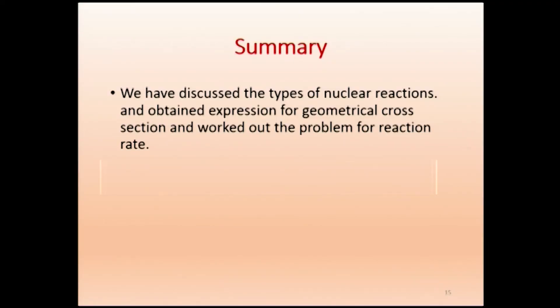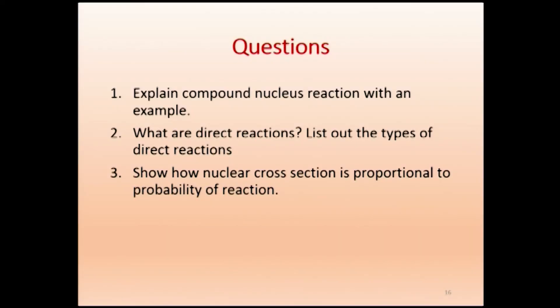To summarize: we discussed the types of nuclear reactions — compound nucleus formation (for low-energy incident particles) and direct reactions (for high-energy incident particles) — and derived the expression for geometrical cross section. The unit barn equals 10⁻²⁸ m². In the next section we will cover the Q-value of a reaction. Questions for today: explain compound nucleus reaction with an example; list the types of direct reactions; show how the nuclear radius relates to the probability of reaction.